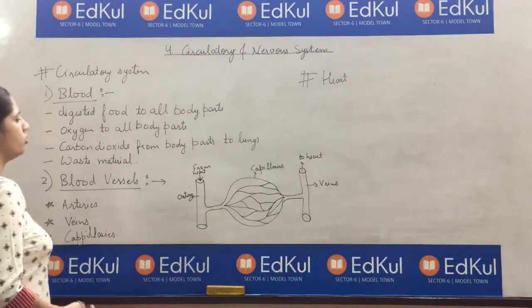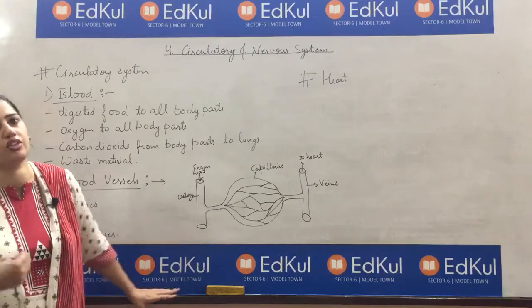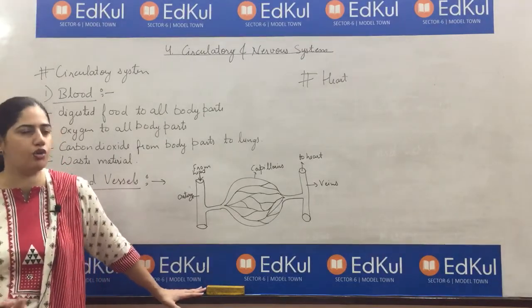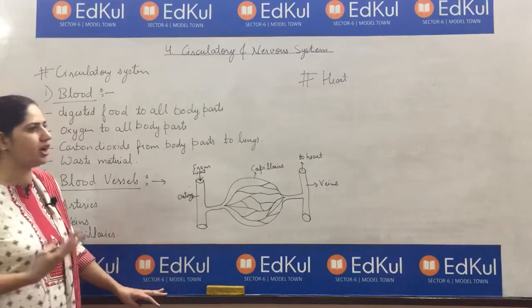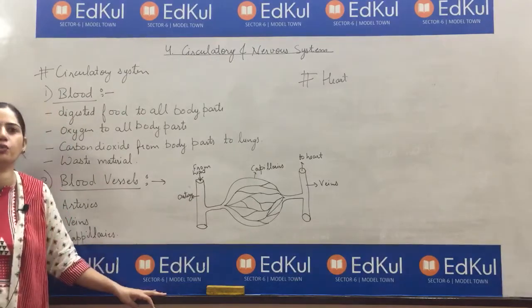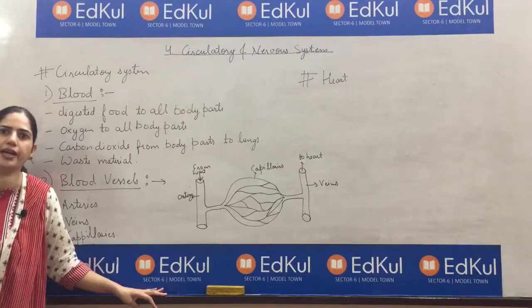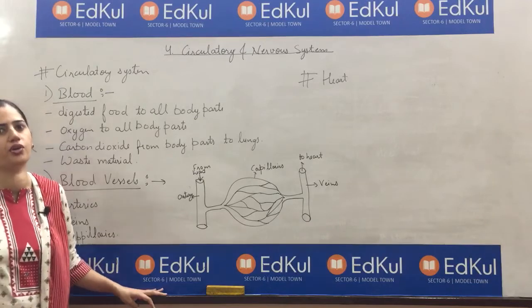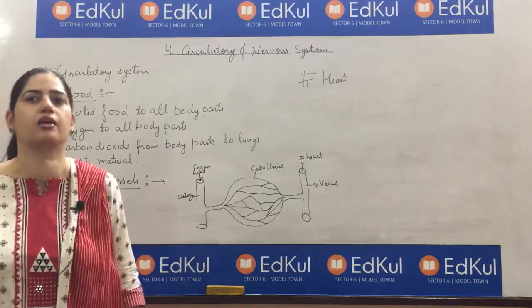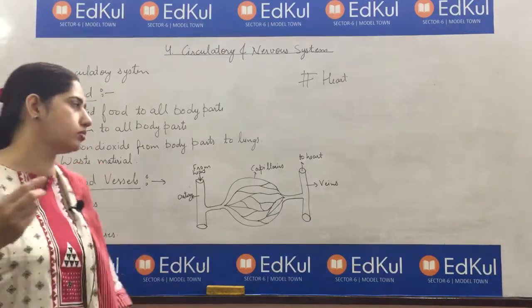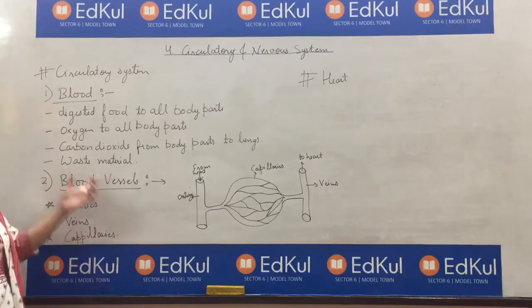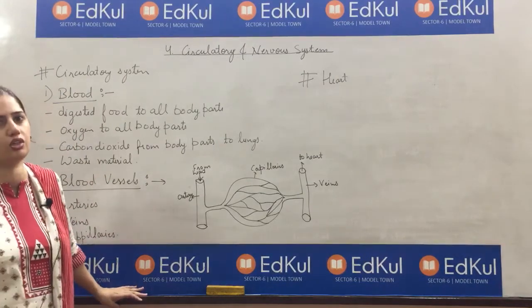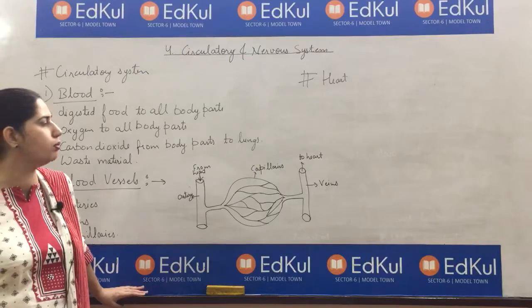What happens in the digestive process? Nutrients are absorbed — and that blood then transports oxygen to all parts of the body.